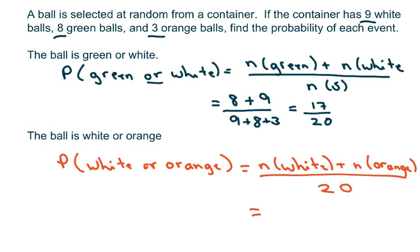So that's going to equal 9 plus 3 over 20, which is 12 over 20. We're going to go ahead and reduce that to 3 over 5.